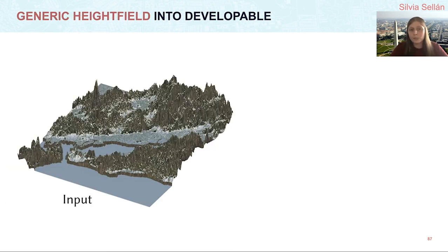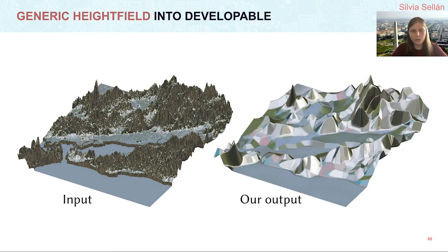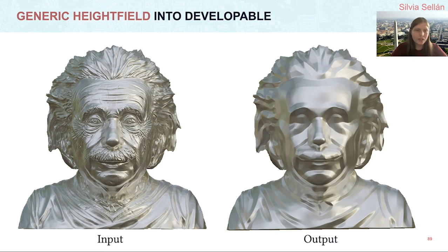Our method can take any input, even if it's far from developable. The heightfield we saw before, which contains high and low frequency detail and is very far from a piecewise developable one, is converted into one by our method. The same happens to our Einstein bust from the beginning of the talk, which becomes piecewise developable.